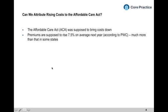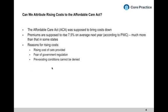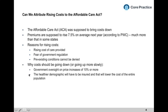Can we attribute rising costs to the Affordable Care Act? It was supposed to bring costs down, but we're seeing a 7.5% average increase in 2013, with some states much higher or lower. In 2014, we're looking at an even bigger number. Reasons for rising costs include new expensive treatments now mandatorily included in premiums, fear of government regulation, and new rules like pre-existing conditions cannot be denied. The idea was that including young, typically uninsured people in the pool at lower risk would drive costs down, but we're not seeing that yet.